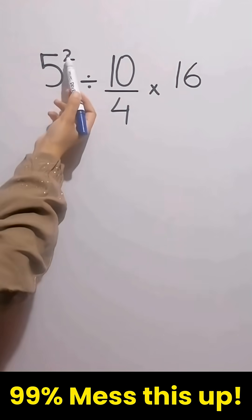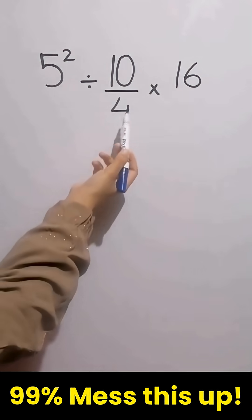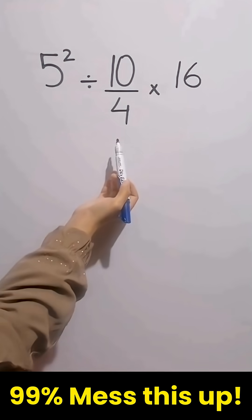We have the expression 5 to the power of 2 divided by 10 over 4 times 16. Now let's go step by step together.